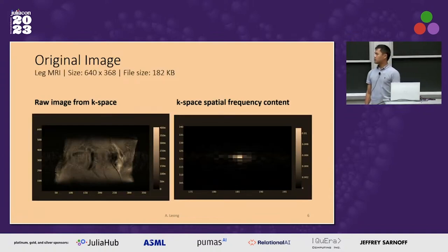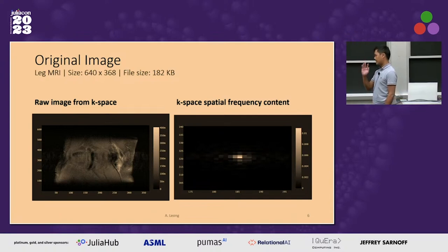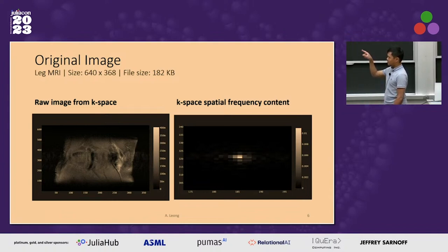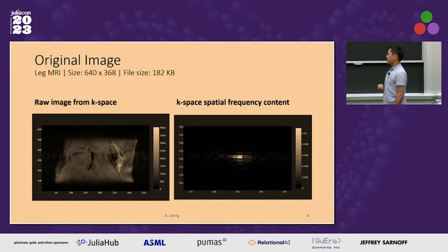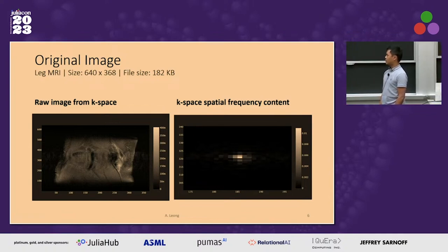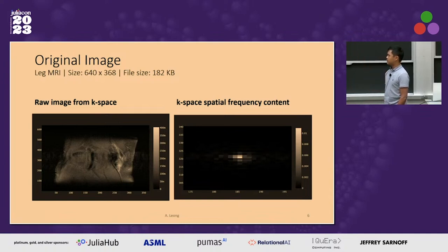Then perform any of your favorite compressed sensing methods to denoise further. That's what the original image looks like on the left there. Once you do the IFFT and the shift, on the right is the k-space representation of that image. You can see that we've got a huge void of black space around, which tells you about the sparsity — the inherent sparsity of this MRI application. A lot of the interesting information is captured in the lower frequencies, towards the middle there.